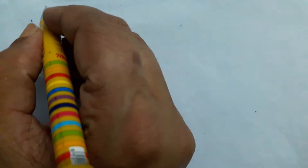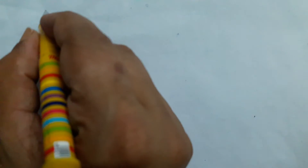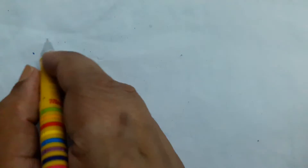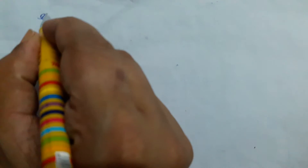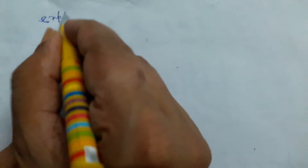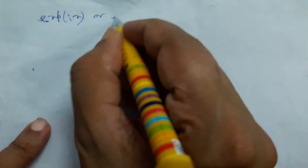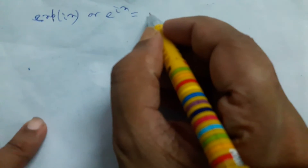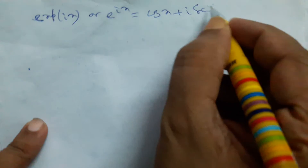Welcome to the viewers. We discussed that interesting result: e to the power ix, that is the exponential e to the power ix, equals cos x plus i sin x.